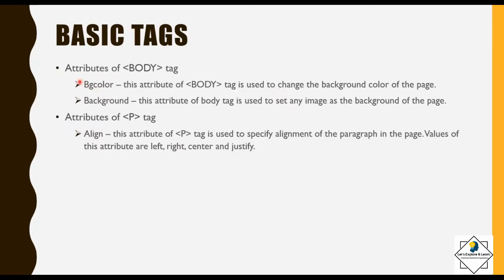Now let us discuss the attributes of the body tag and the P tag. Under body tag we will discuss two attributes: bgcolor and background. The bgcolor attribute changes the background color of the page, whereas the background attribute sets any image as the background of the page. For the paragraph tag, the align attribute specifies the alignment of the paragraph. Its values are left, right, center, and justify — four types of alignments.